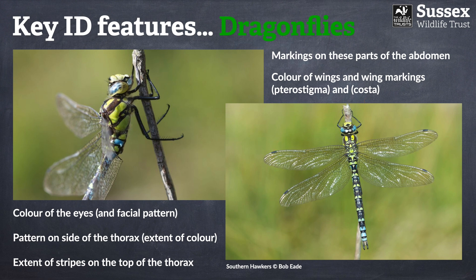You may be thinking: how on earth am I going to look at any of these features when the dragonfly simply will not stop flying? It's a valid point, and the only advice I can offer is to be patient. Some dragonfly species are prolific perchers and you're likely to get a good look at them; some not so much. All I can say is they will eventually perch, and you just have to keep your fingers crossed that they happen to perch close to where you're standing.